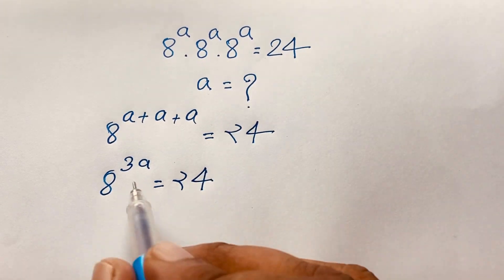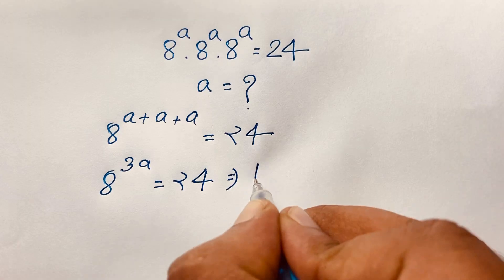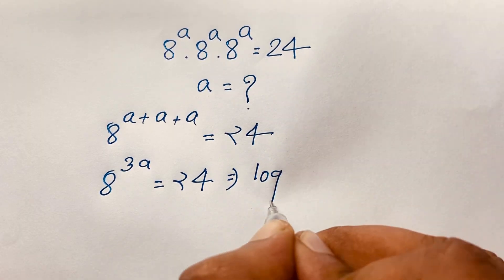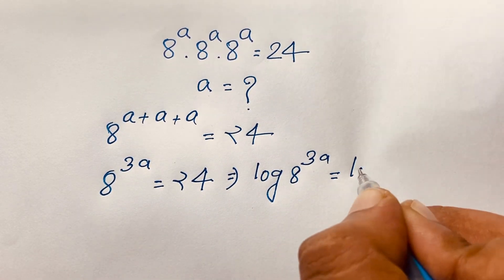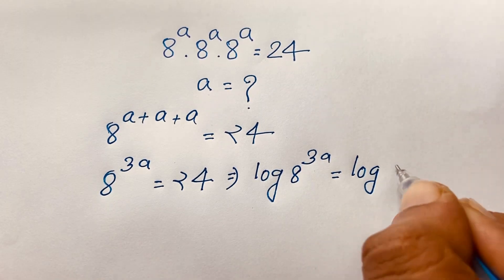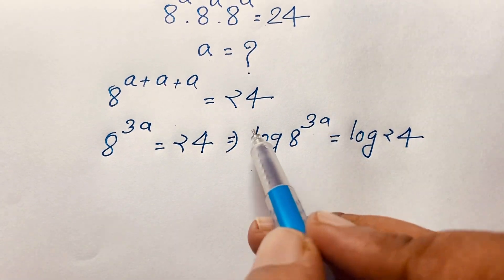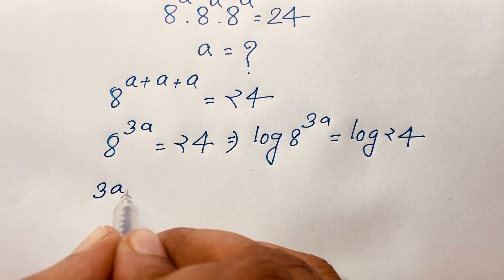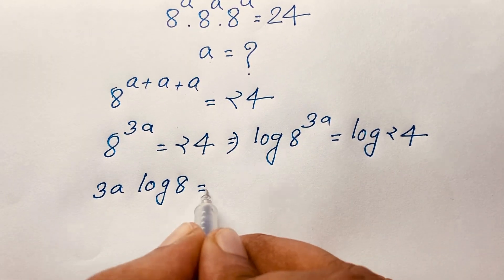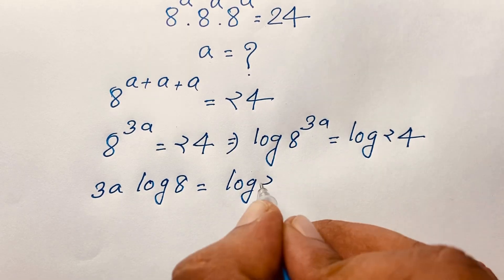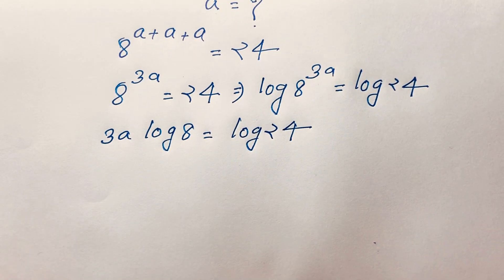Now at this point, if I want to find out the value of A in this exponential problem, I use both sides of log: log 8 to the power 3A is equal to log 24. Now I can see this exponent moving in front, so it will be 3A according to logarithm rules. Here is log 8 is equal to log 24. Then I divide both sides by log 8.